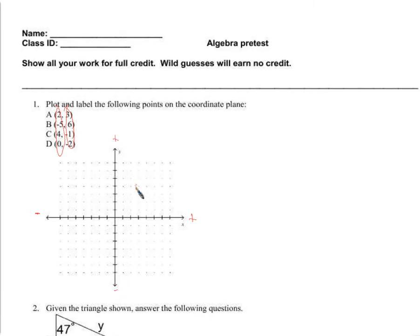For the first one, x is 2 and y is 3, and together they make this point right here — that would be point a. For point b, negative 5 on the x-axis would be here, and 6 on the y-axis takes us here, so that would be point b.